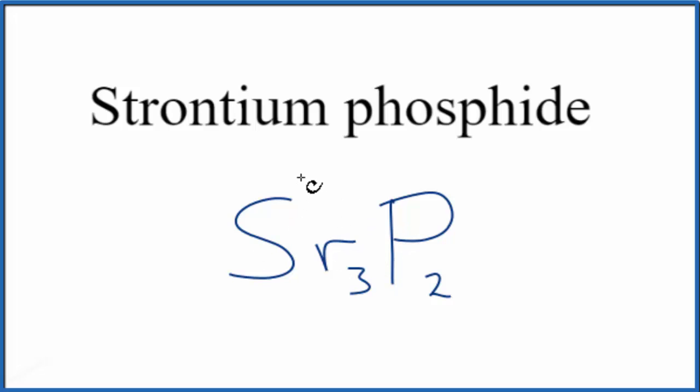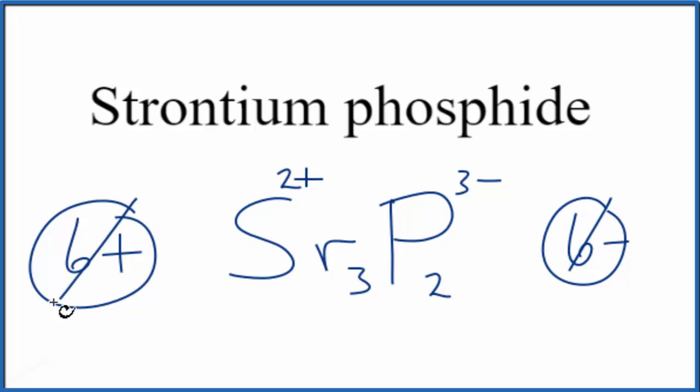We said Strontium group 2, 2 plus, and then the Phosphide ion, 3 minus. 3 times 2 plus, that's 6 plus, 2 times 3 minus is 6 minus. So these two numbers, they add up to zero, give us a net charge of zero. This is the correct formula for Strontium Phosphide.